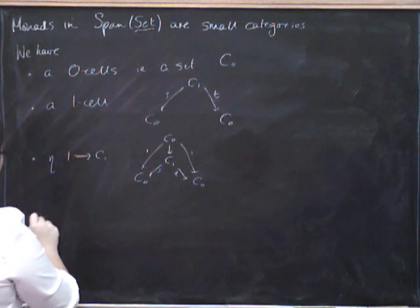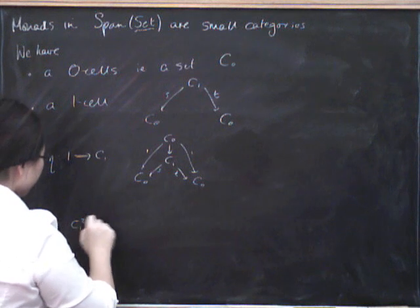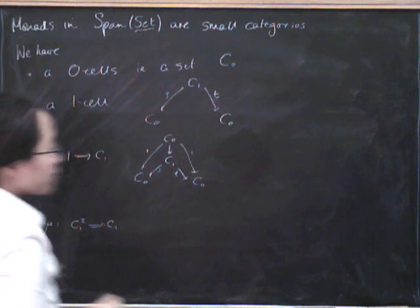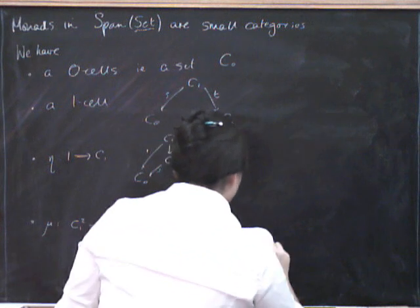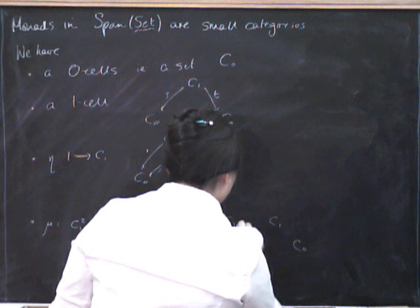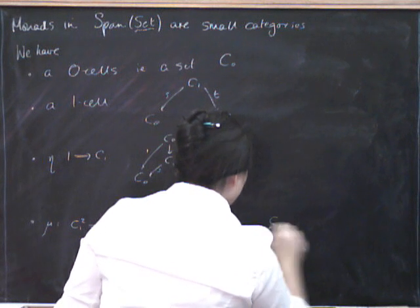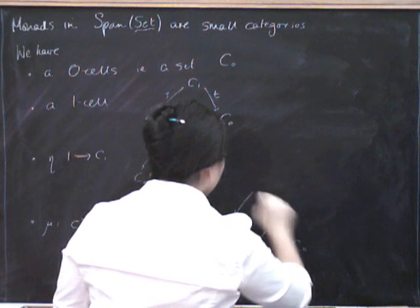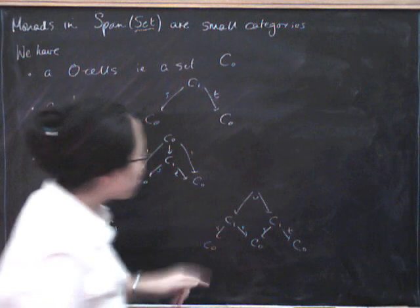So now what we've got to have is a multiplication as well, which has to go from C1 squared to C1. So first of all, we better see what C1 squared is. We've got to take our span and compose it with itself. So here's S, T, S, T. We're going to compose it with itself, which means we take a pullback here.